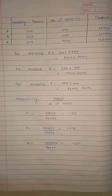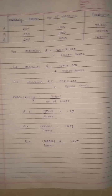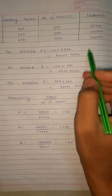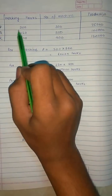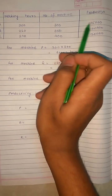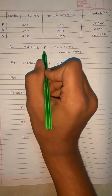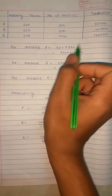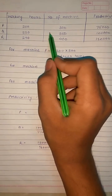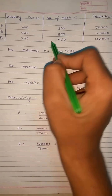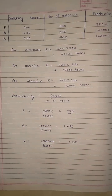This is the second numerical of the same chapter. We have been given working hours, number of machines, and total production. We multiply working hours by number of machines to get input — 60000 hours — and the output production is 75000. So the productivity index for machine P is output divided by input, giving 1.25. Similarly for machines Q and R we perform the same steps to find their performance indices. This is simple and can be asked for 4 marks.